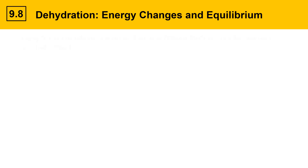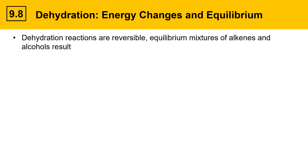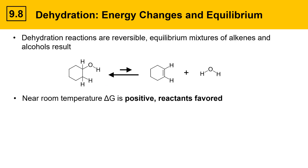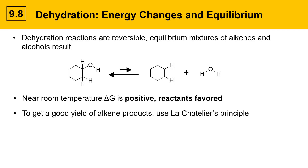Dehydration reactions are reversible and equilibrium mixtures of alkenes and alcohols result. Here's our representative equilibrium reaction of cyclohexanol with cyclohexene and water, with the arrows indicating that reactants are really favored — consistent with our conclusion that near room temperature delta G is positive. To get a good yield of alkene products, we can use Le Chatelier's principle, which states that if you perturb an equilibrium, the reaction will respond by trying to reestablish it.